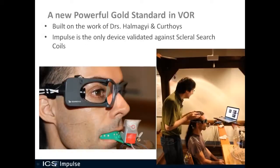ICS Impulse is bringing diagnostic accuracy and efficiency into balanced testing. We want to make sure you perform the test properly so that you have accurate diagnostic results as well. The new powerful gold standard for vestibular ocular reflex, the ICS Impulse was built on the work of Drs. Hamagi and Kurthois. Impulse is the only device validated against scleral search coils at the time of this video. You see the ICS Impulse goggles, the coil on the patient's eye, and the bite bar to measure the patient's head movement, with the full system set up to simultaneously collect coil data along with goggle data.